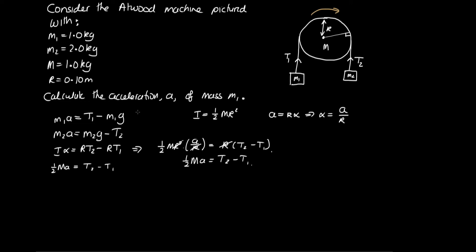Now what we have is three equations—one, two, three—that we can solve simultaneously. So we can do one plus two plus three. And this gives us m₁a + m₂a + ½Ma is equal to T₁ - m₁g + m₂g - T₂ + T₂ - T₁. So now you can see the really nice thing is that this tension cancels this tension, this tension cancels this tension, and the acceleration is common across all of these terms. So we can rearrange this and say...